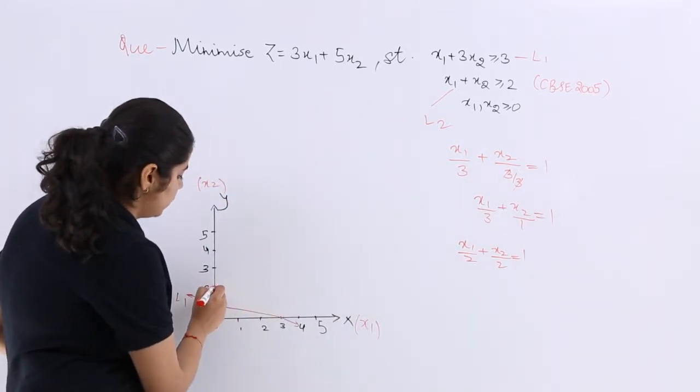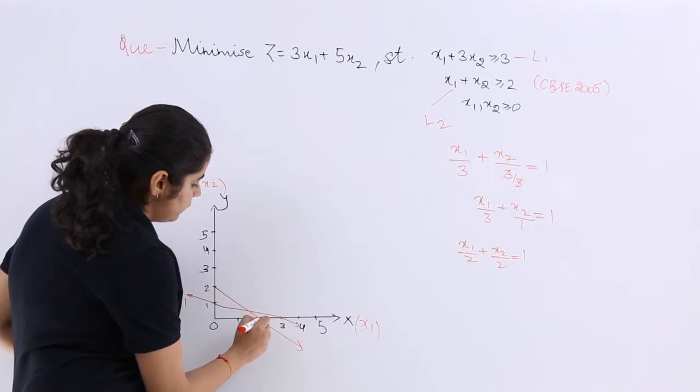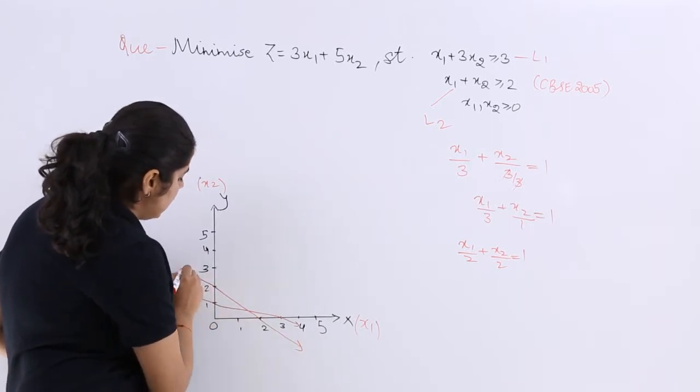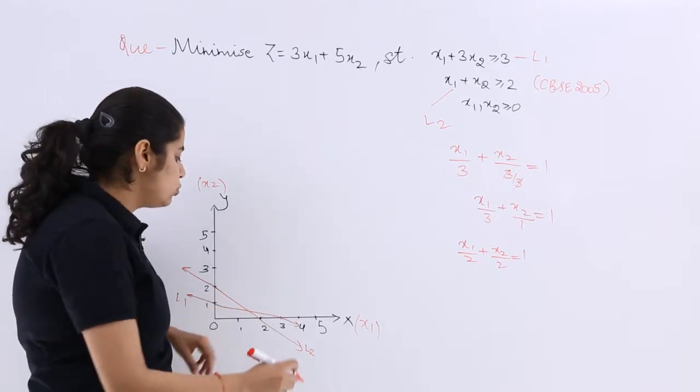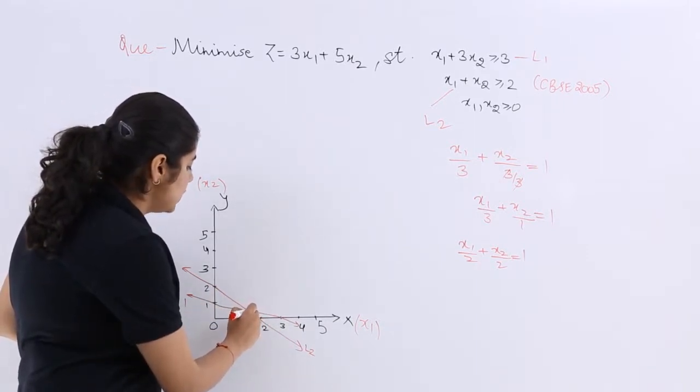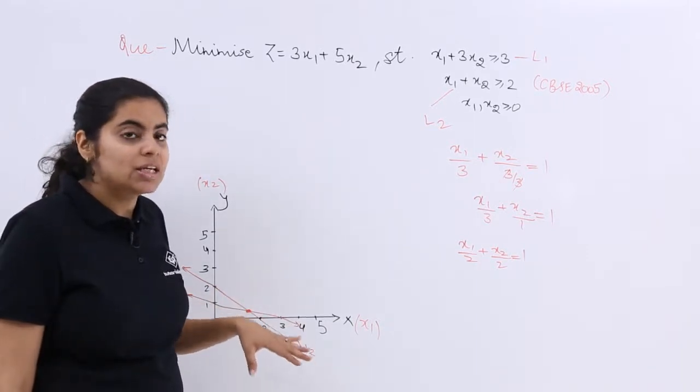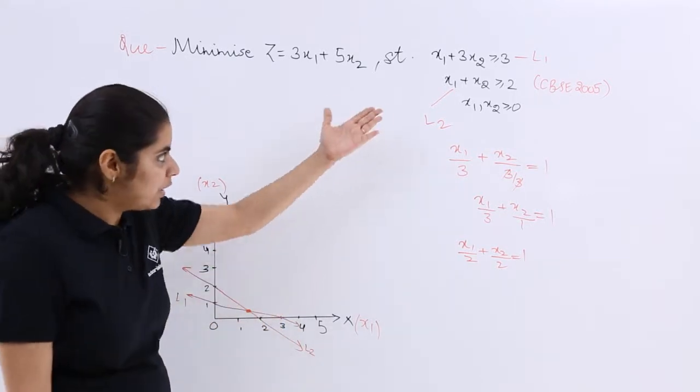So this is your 2, this is your 2. Again, this has not been made with the ruler, so this may not come out to be straight. So you find that there is an intersection point, and that intersection point would be important to find out. Let's find out here only.